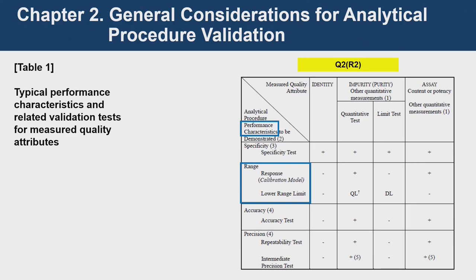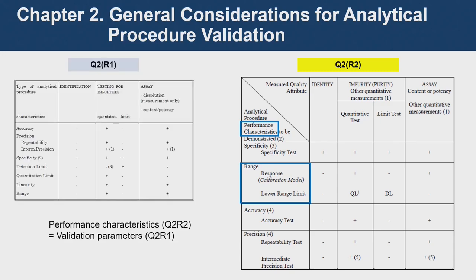This table is something you're already quite used to compared to the previous version. There is something called performance characteristics, previously known as validation parameters in Korea. Regarding linearity and range, the lower range limits have been included to represent the overall range. Depending on the concentration, the response can be linear as well as non-linear, and that is why the word linearity has been replaced with range.